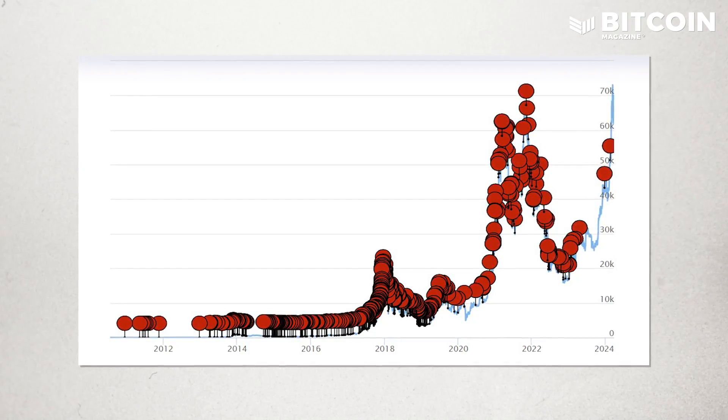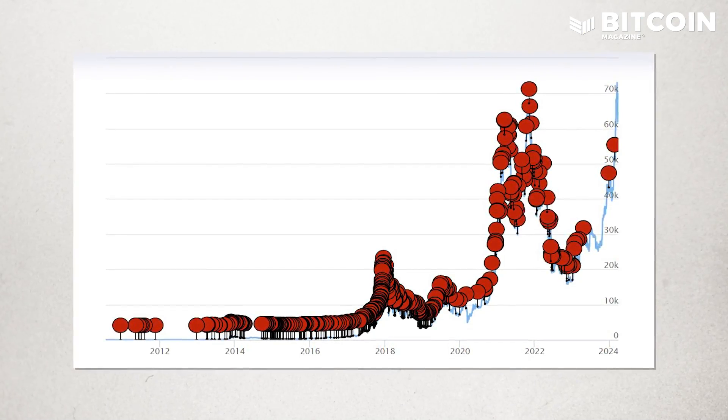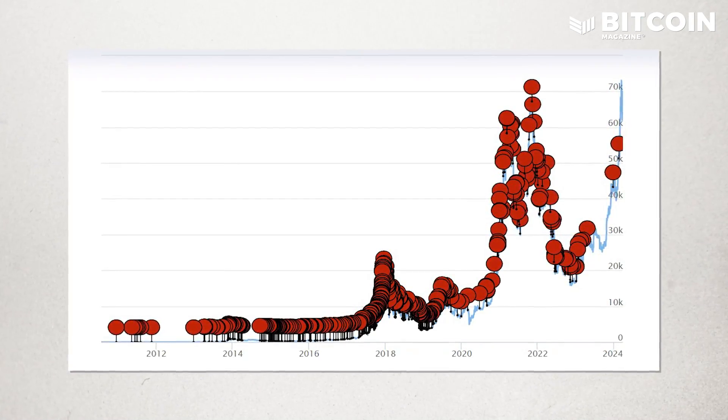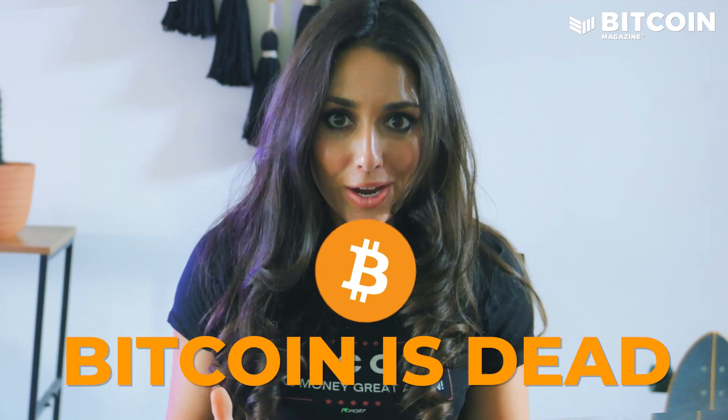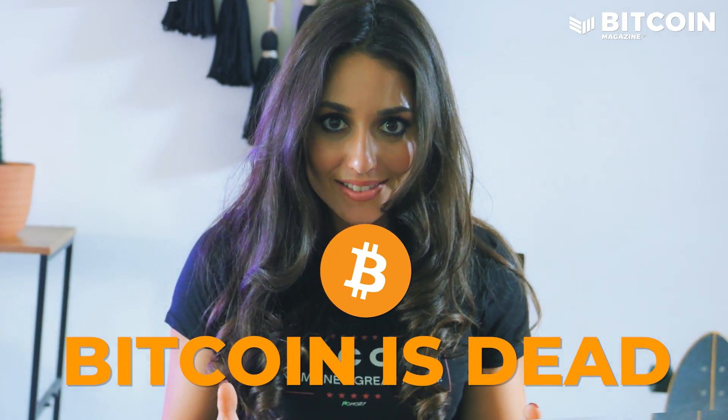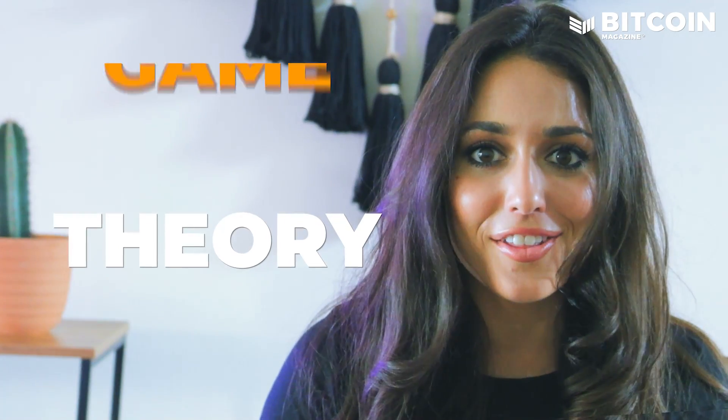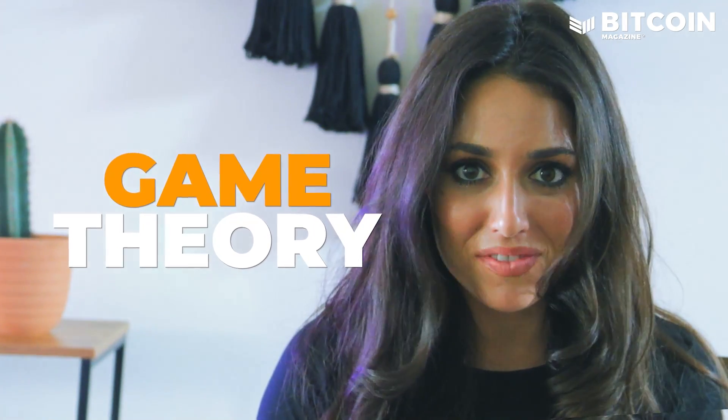Each red dot on this chart represents a time that a news outlet said Bitcoin is dead. But despite this, the price is the highest it's ever been. And that's all thanks to Game Theory.